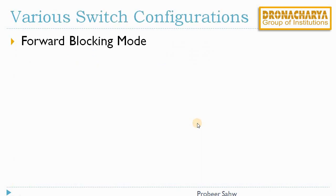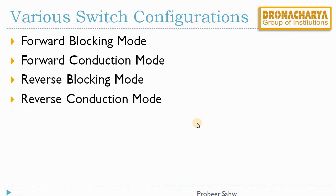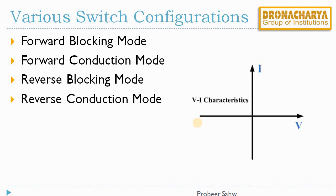The four configurations are: forward blocking mode, forward conduction mode, reverse blocking mode, and reverse conduction mode. Whenever we describe switches in these configurations, we also describe the IV characteristics or VI characteristics of the switches along with their operation.